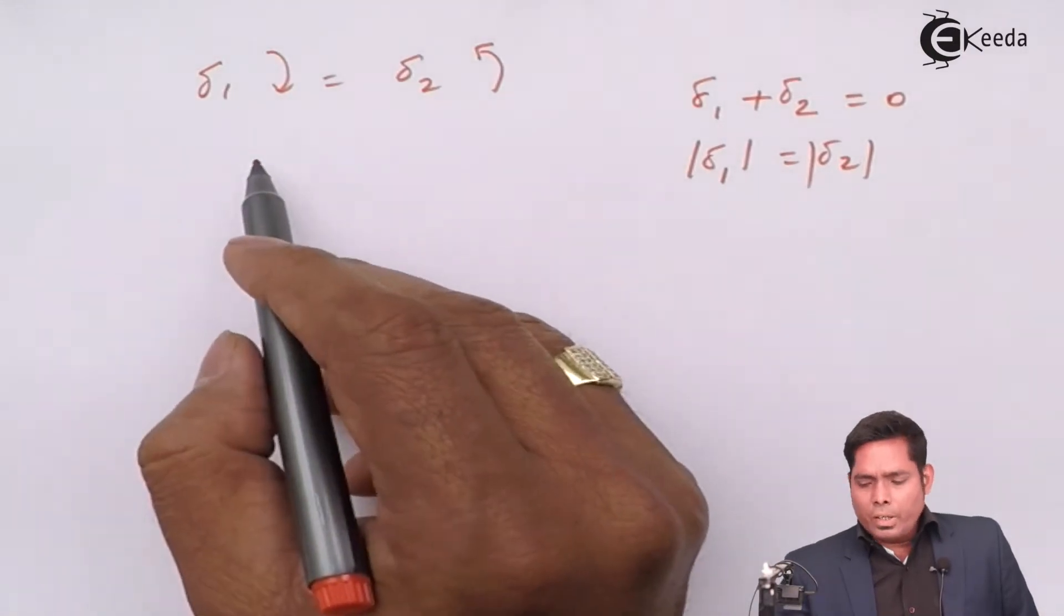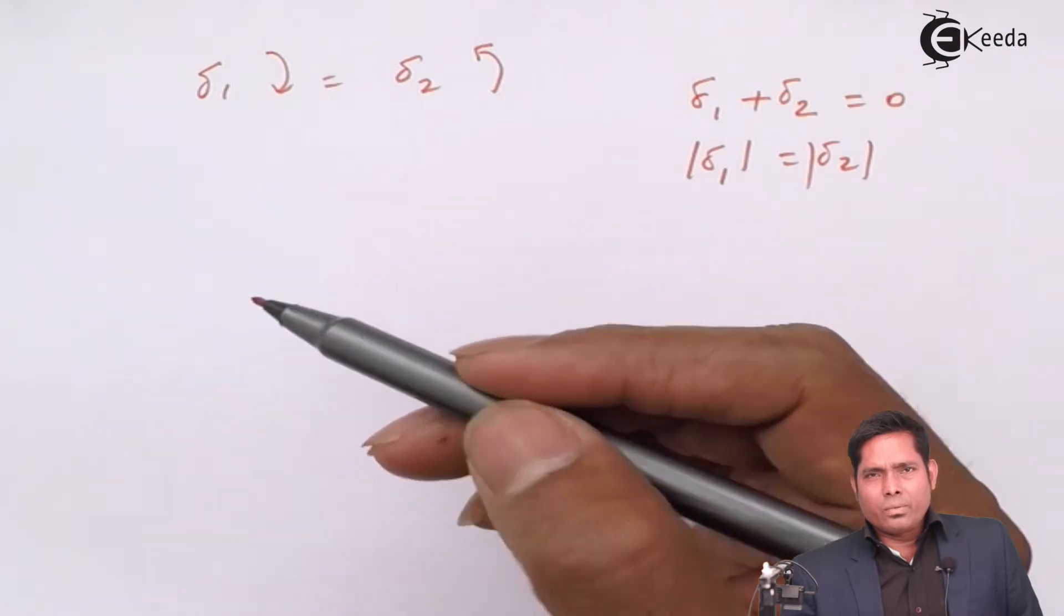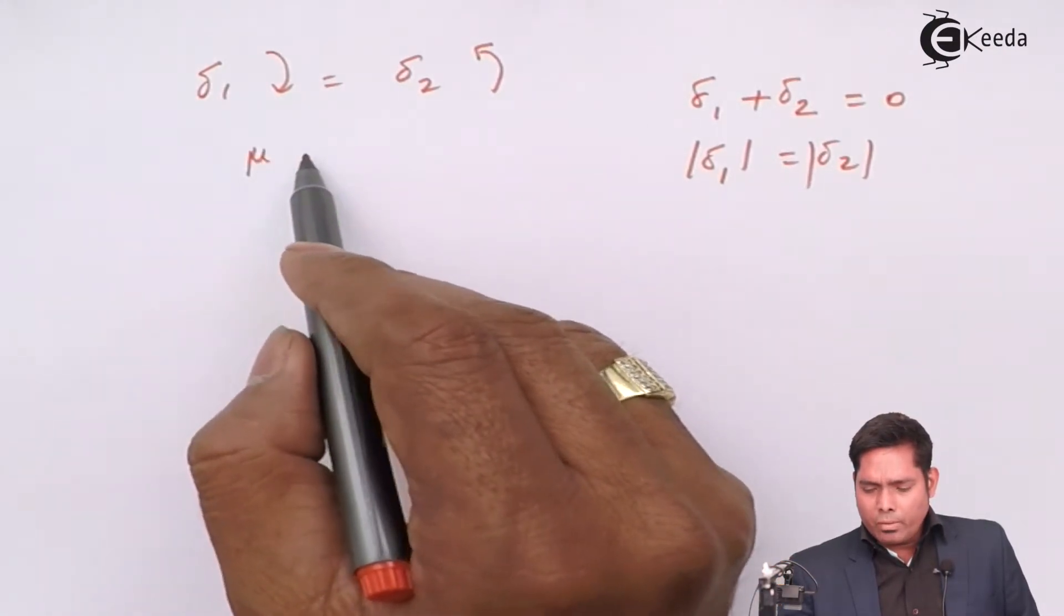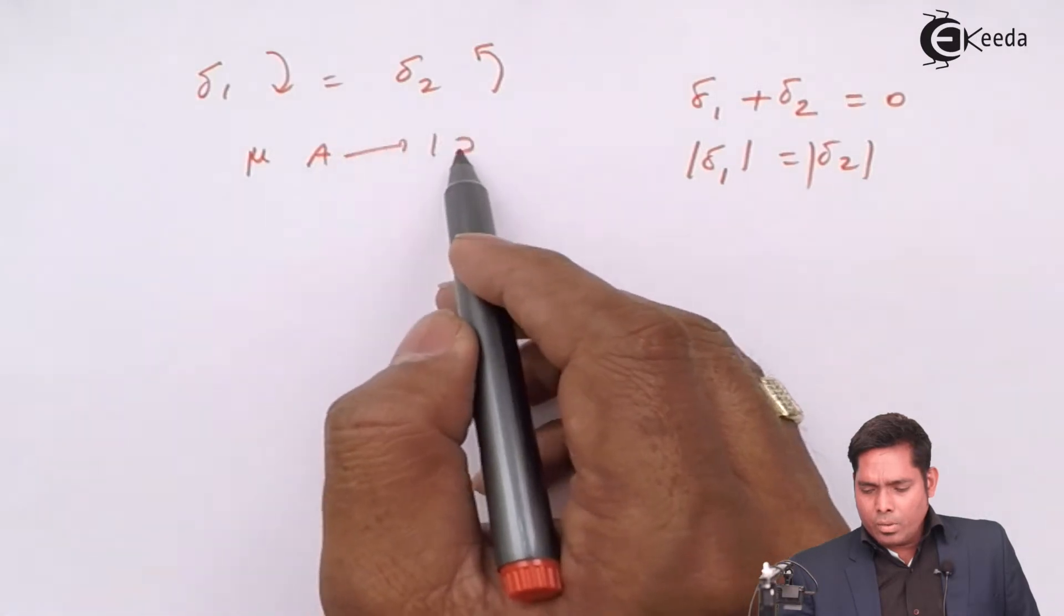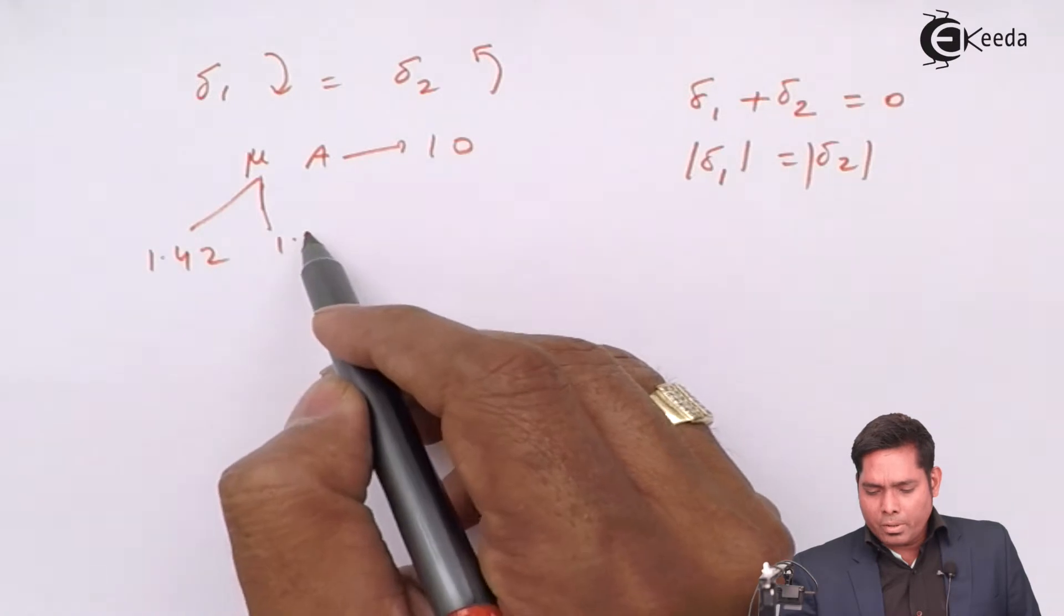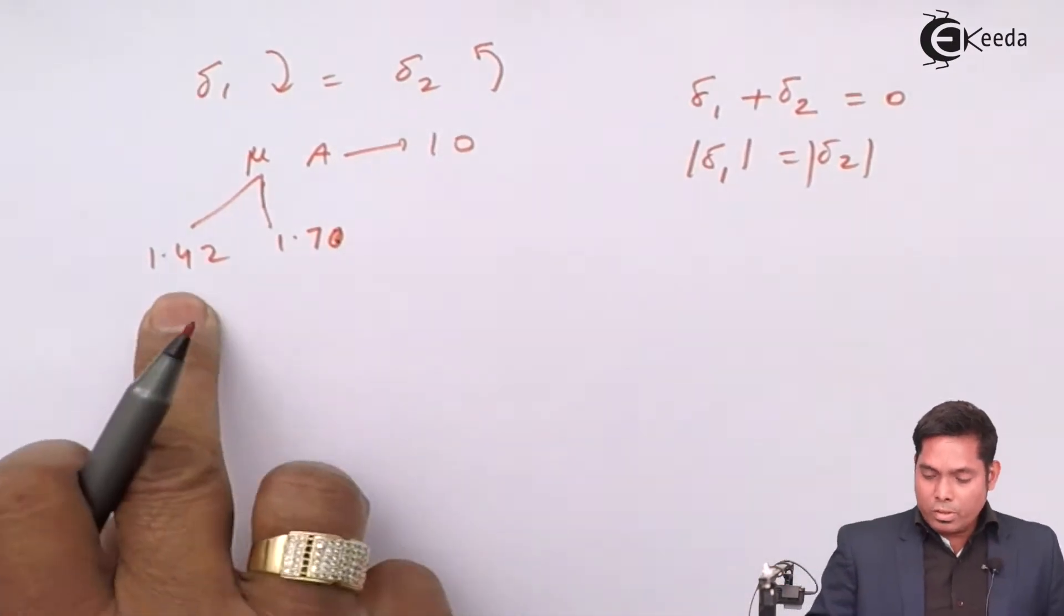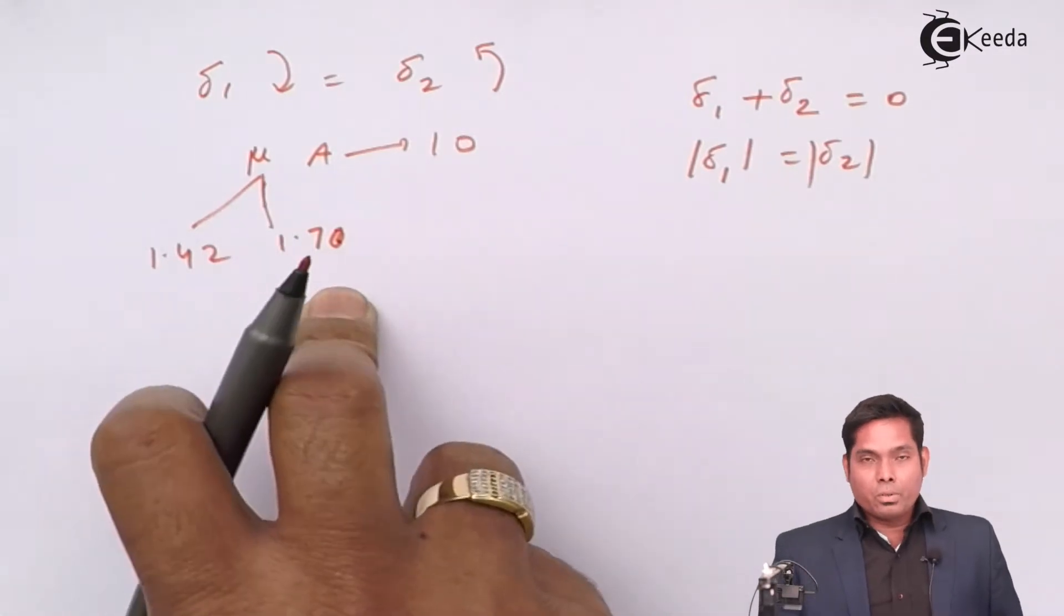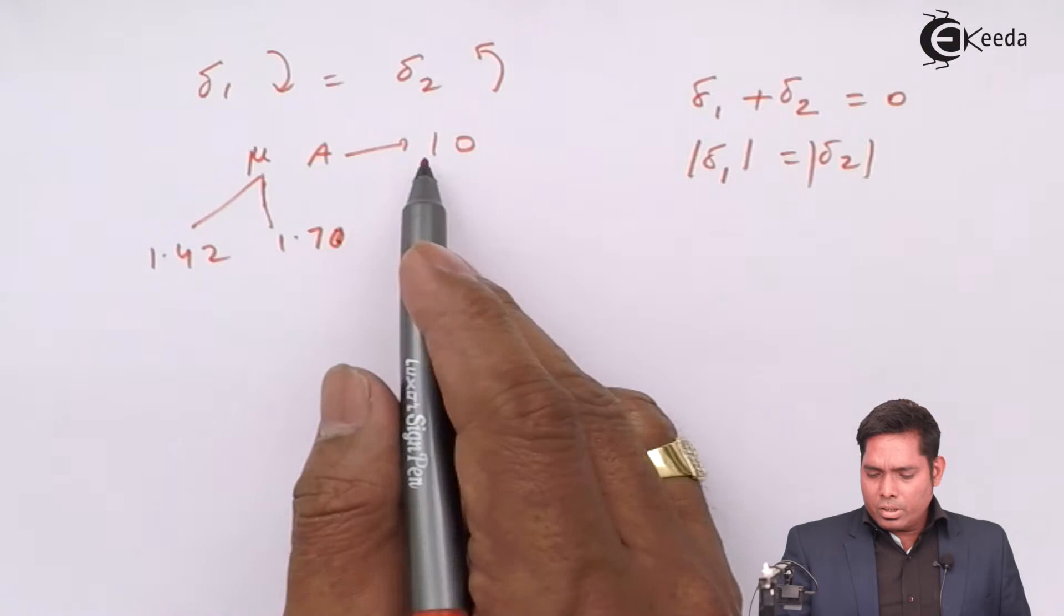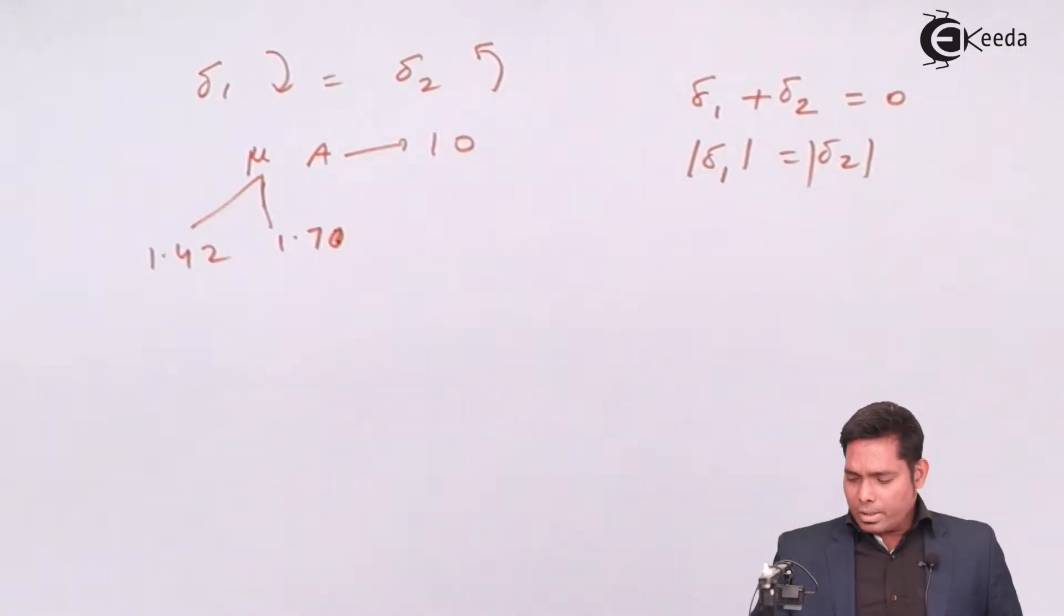What is the value of delta? How are delta, angle of prism and refractive index related? We are given mu, we are given a. a is 10, mu has two values, one is 1.42, another is 1.70. This is for first prism and this is the second prism for producing no deviation.